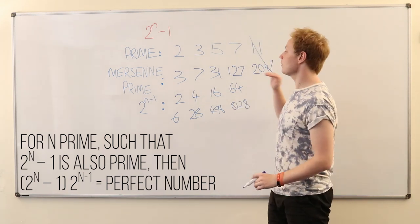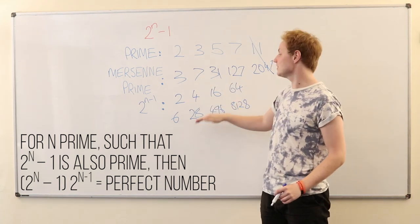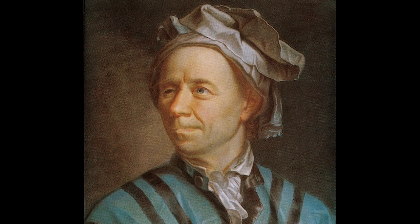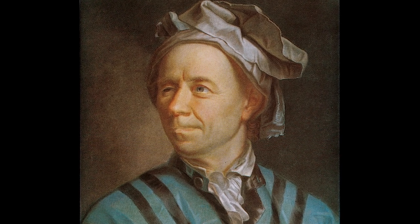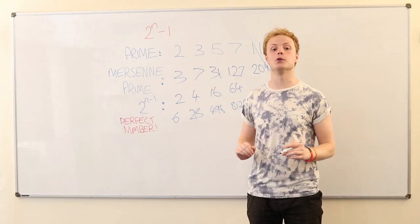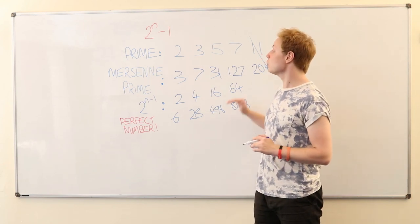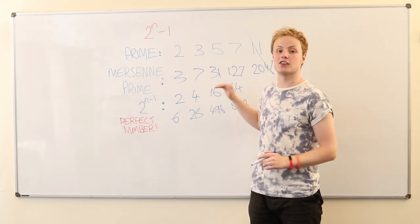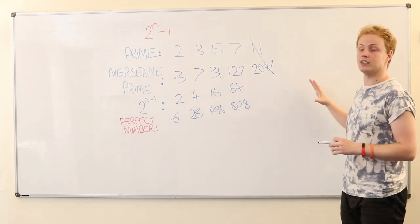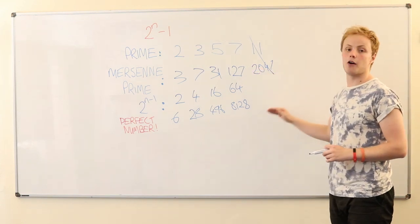So what Euclid showed is that if you have any Mersenne prime here, you can multiply it by this value and you get a perfect number. Then, over 2,000 years later, the legendary Swiss mathematician Leonard Euler came along and proved that the other way around is also true. So whenever we have an even perfect number down here, we also have a corresponding Mersenne prime from this formula. So that means that if we continue this table on forever, we get exactly the same number of Mersenne primes and even perfect numbers.